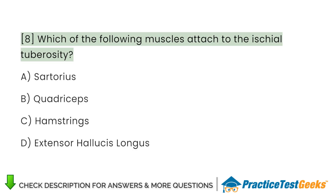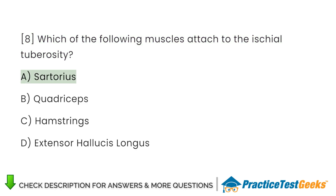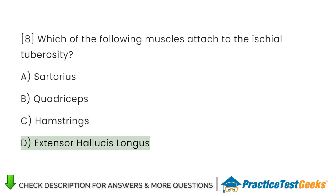Which of the following muscles attach to the ischial tuberosity? A. Sartorius. B. Quadriceps. C. Hamstrings. D. Extensor hallucis longus.